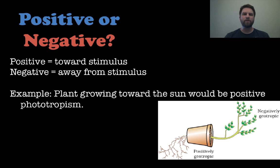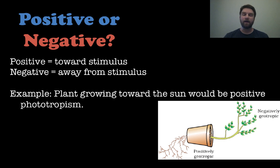We often talk about tropisms as either being positive or negative. A positive tropism is movement toward the stimulus; negative is away from the stimulus. For example, when a plant grows towards sunlight, that is positive phototropism. With gravitropism, stems growing up would be negatively geotropic, and roots growing down — with gravity, towards the stimulus — would be positively geotropic.